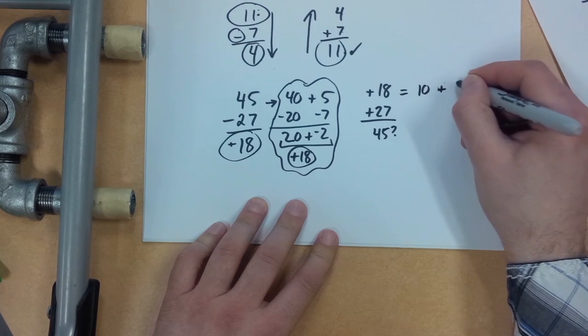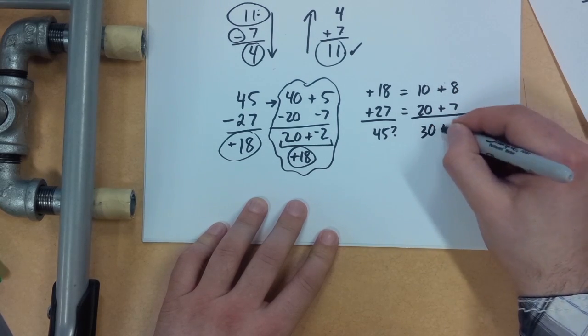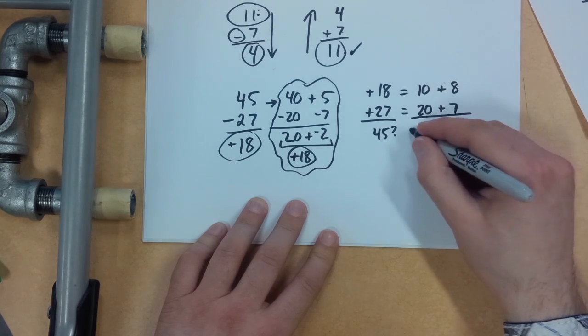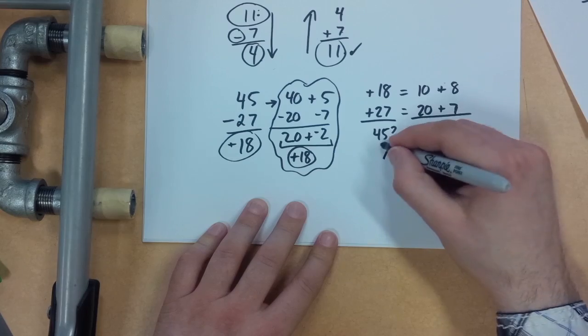Well, I'll break that down again. 10 plus 8 equals 20 plus 7. Okay, that's 30 plus 15. And yes, of course, that does equal 45. So that means this is correct.